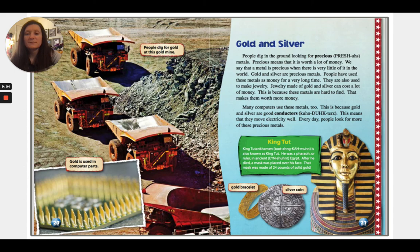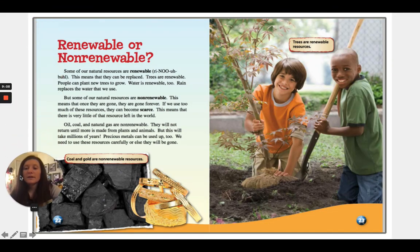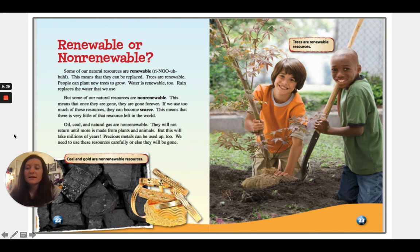Some of our natural resources are renewable, which means that they can be replaced. Trees are renewable — people can plant new trees to grow. Water is renewable too, as rain replaces the water that we use. But some natural resources are non-renewable, meaning that once they are gone, they are gone forever. If we use too much of these resources, they can become scarce — there is very little of that resource left. Oil, coal, and natural gas are non-renewable; they will not return until more is made from plants and animals, which takes thousands of years. Precious metals can be used up too.